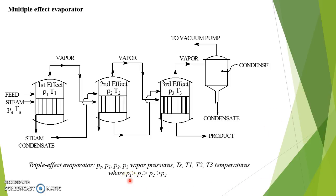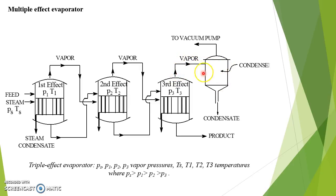The vapor pressure of steam PS is greater than the pressure in the first effect evaporator, which is greater than the pressure in the second effect evaporator, and similarly greater than the third effect evaporator. In this diagram all evaporators are connected with each other. The vapor from the first evaporator is used as a source of steam for the second evaporator, and similarly from the second evaporator it is used as a steam source for the third effect evaporator. From the third effect evaporator the vapor goes to the condenser and then to the vacuum pump, and the condensate is collected from the bottom of the condenser.